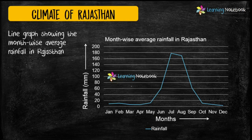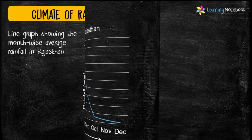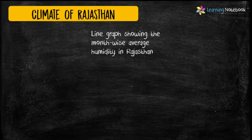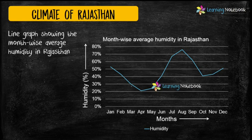In the same way, month-wise average rainfall of Rajasthan can also be shown using a line graph. Similarly, a line graph can also be used to depict month-wise average humidity in Rajasthan.